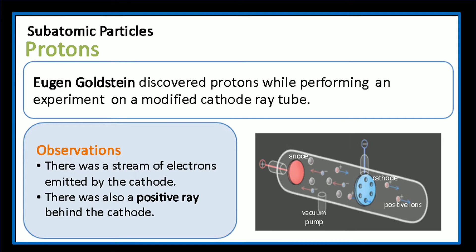Eugen Goldstein discovered positive charged particles while performing an experiment on a modified cathode ray tube, made from a metal disc with holes. A stream of electrons emitted by the cathode was observed. There was also light formed at the positive electrode. This light is called a positive ray.